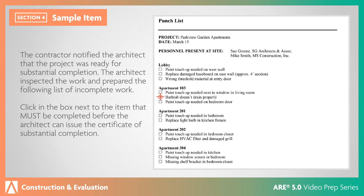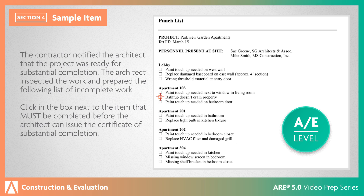This is the correct answer. According to the Project Resource Manual, CSI Manual of Practice, reaching substantial completion does not mean all the work is completed. However, any remaining work must not prevent the owner's use of the building. The only item on this punch list that prevents full use of the building is the bathtub that doesn't drain properly. This AE-level item requires you to evaluate a typical construction procedure and determine the outcome.